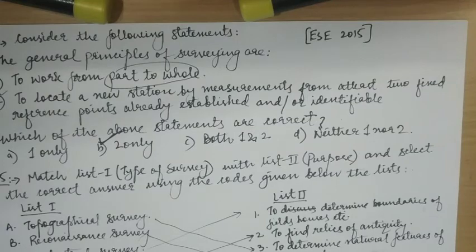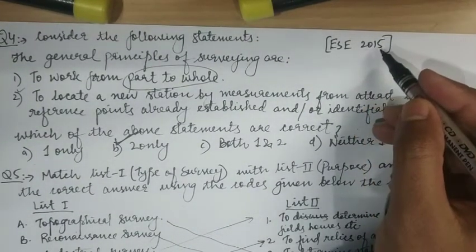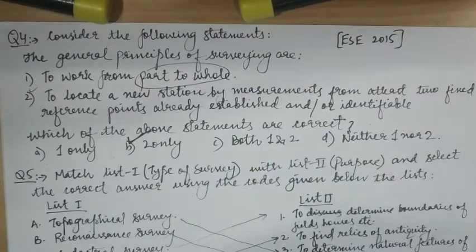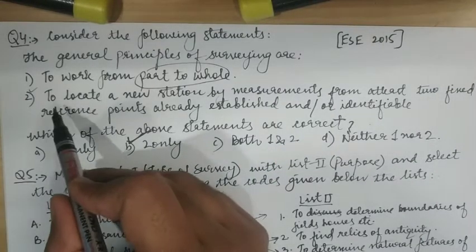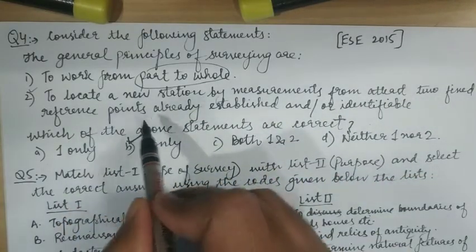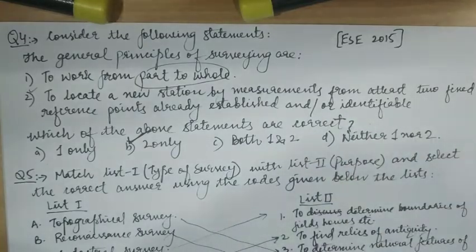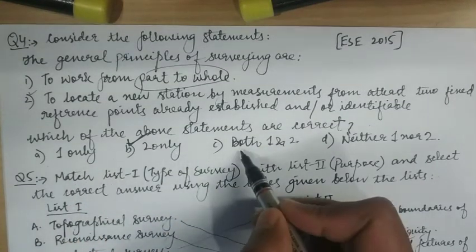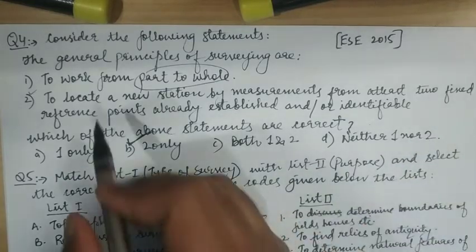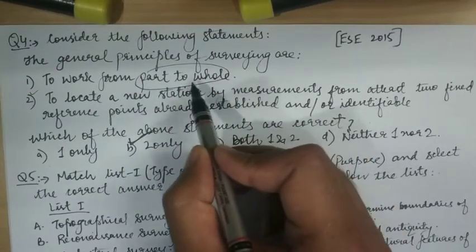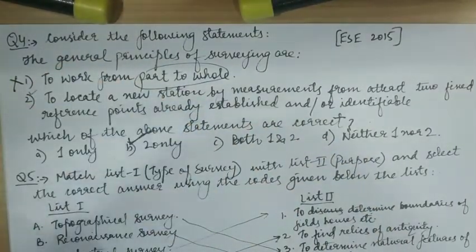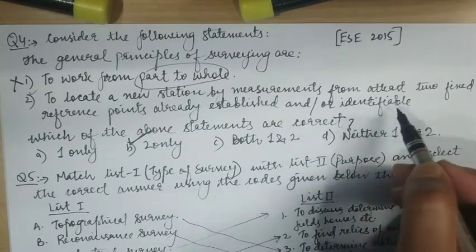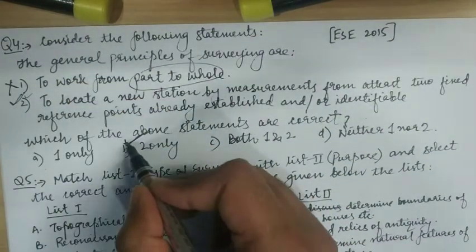Now some previous year questions from ESE 2015: 'Consider the following statements. The general principles of surveying are — (1) to work from part to whole; (2) to locate a new station by measurements from at least two fixed reference points already established and/or identifiable. Which of the above statements are correct?' Options: A — one only; B — two only; C — both one and two; D — neither one nor two. The first principle of surveying is to work from whole to part, not part to whole — so statement one is wrong. Statement two is correct. The answer is Option B: two only.